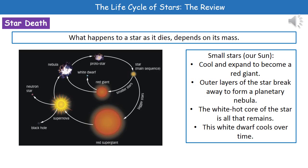What happens to a star once it dies is completely dependent on its mass. If we consider a small star first, like our sun, then as it starts to die it's going to cool and expand to become something called a red giant. The outer layers of the star then break away, forming a new planetary nebula, and the white hot core of the star is all that's going to be left — and this is referred to as a white dwarf.